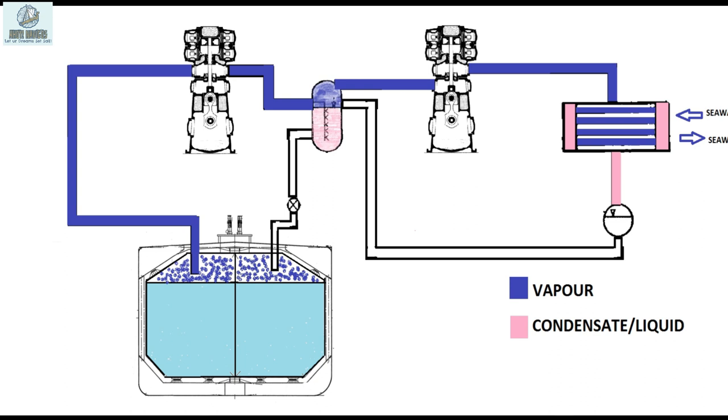From the condenser liquid is passed on to the receiver. Liquid collected in the receiver is at high pressure. From here majority of liquid from receiver passes through to the intercooler.